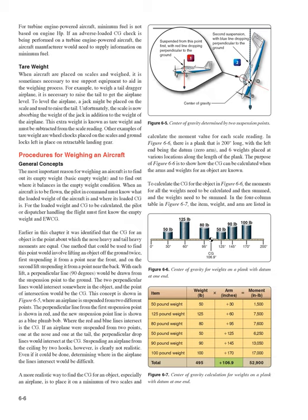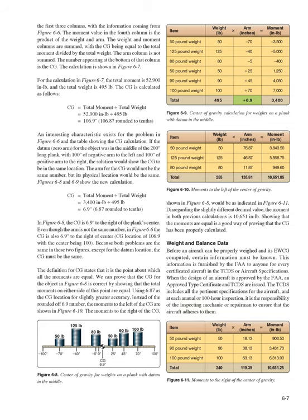To calculate the CG, the moments for all weights are calculated and summed, and the weights are summed. In the four-column table (Figure 6-7), item, weight, and arm are listed; the moment is the product of weight and arm. The CG equals total moment divided by total weight. For the calculation in Figure 6-7, total moment is 52,900 in·lb and total weight is 495 pounds, giving a CG of 106.9 inches (52,900 ÷ 495 = 106.87, rounded to tenths).